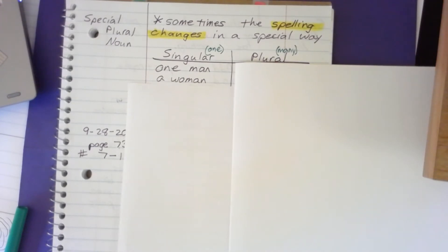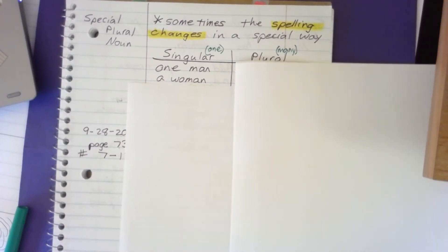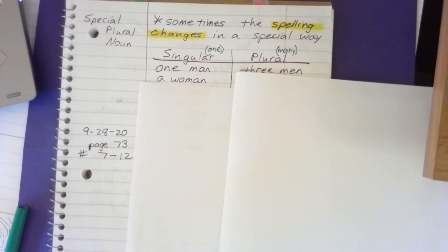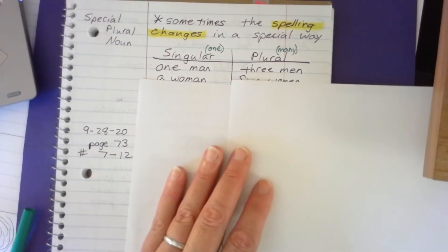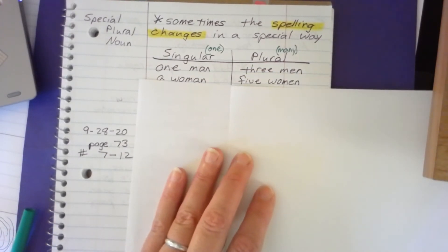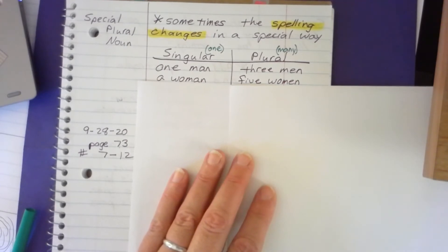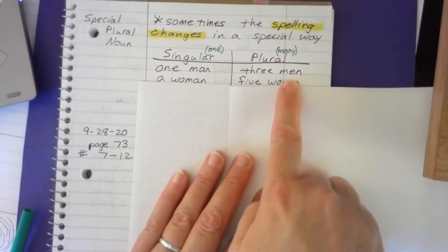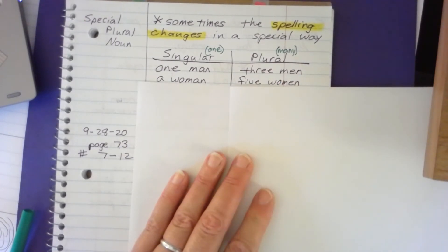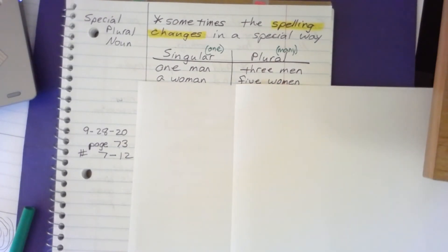A woman is singular, or one. Do we say 'ten woman'? No, that doesn't sound right. We have to change the spelling — we change it to five women. See how it changed? Same as men, the spelling changed.